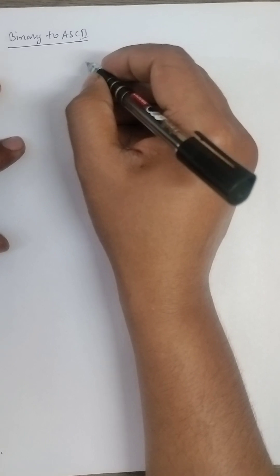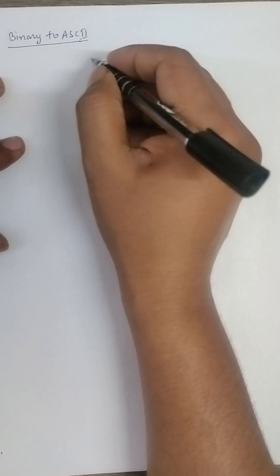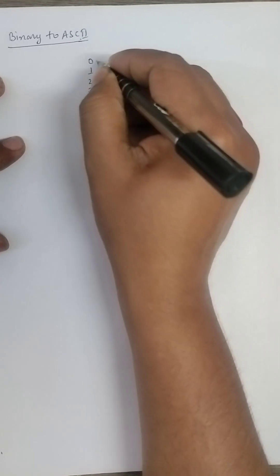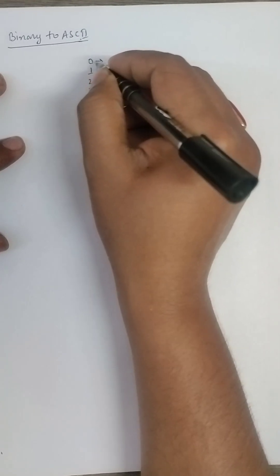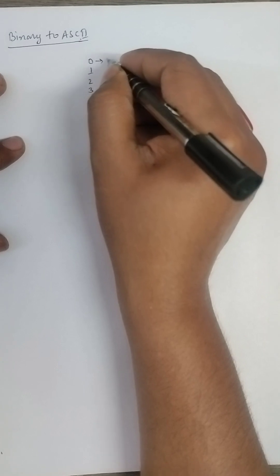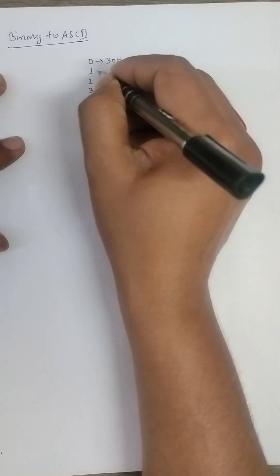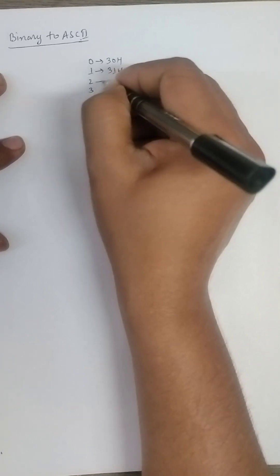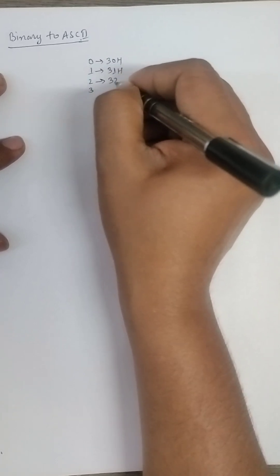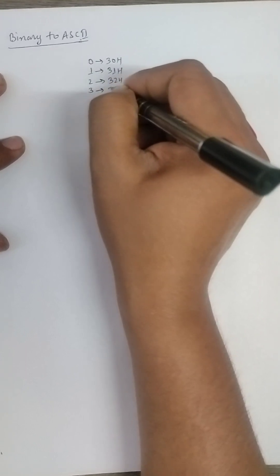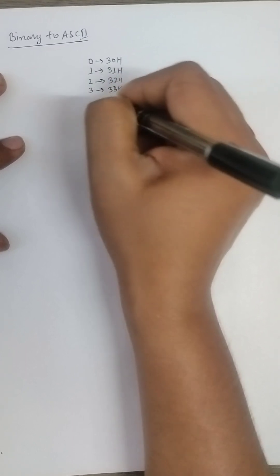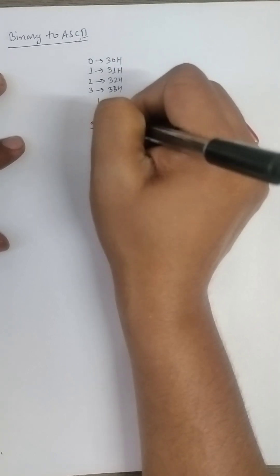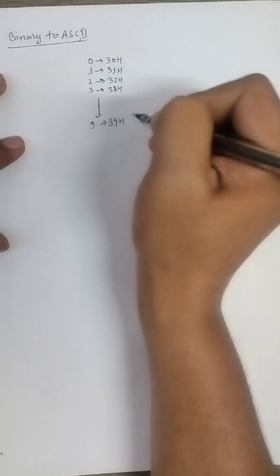First you have to understand what is the ASCII code of 0, 1, 2, 3, and so on. If you are converting 0 into ASCII code you get 30H. Converting 1 gives 31H, converting 2 gives 32H, converting 3 gives 33H. Like that you are going to convert up to 0 to 9. If you are converting 9, you get 39H.